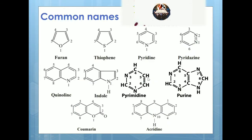We have now learned the three rules: first, which heteroatom is present; second, what is the ring size; and third, what should be the priority in case of more than one heteroatom.